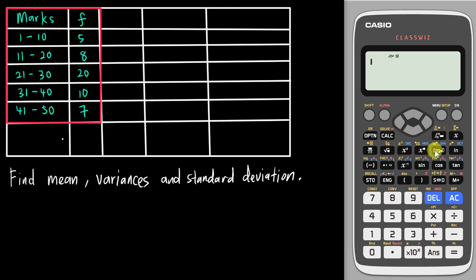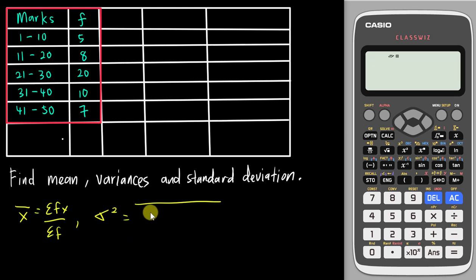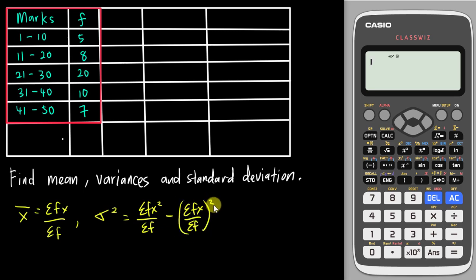First you must know the formulas. Mean is represented by this sign, which is sum of fx over sum of f — you will see all these symbols in the table. Then we have variance. The formula for variance is: sum of fx² over sum of f, minus the quantity sum of fx over sum of f, squared. You can see that second term is actually the mean squared.